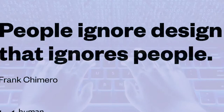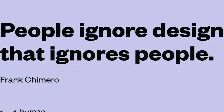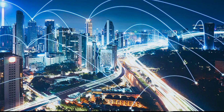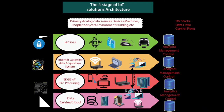There's a beautiful quote by Frank that conveys the importance of architecture: people ignore design that ignores people. So I hope in this video I am able to explain what IoT architecture means and how it is important. Basically, it is a reference model that helps make system design simple and possible, and defines what type of hardware, software, and components are required.